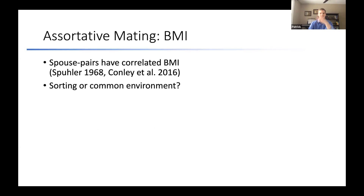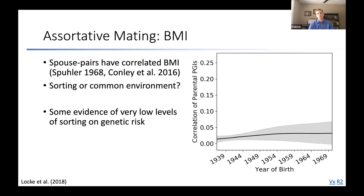BMI is an interesting example. There's a strong phenotypic correlation between parents' BMI in the US. The question is: how much is people sorting on risk for obesity, versus parents having the same environment and diet over time? When we look at the correlation of predicted BMI in the UK Biobank, we see slightly positive but generally quite low estimates — about 0.02 — much smaller than the phenotypic correlations we observe. This suggests that spousal correlations in BMI and obesity rates have more to do with environmental factors than sorting on genetic risk.